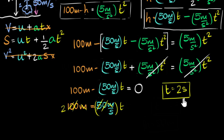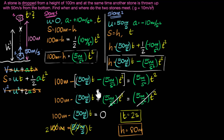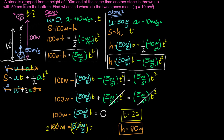Now let's calculate H. With T = 2, substitute into either equation. Doing so gives H = 80 meters. So the stones meet 80 meters above the ground after 2 seconds. To summarize: when two objects are in free fall and we need to find when and where they meet, we build equations for both using the equations of motion and solve the system for H and T.